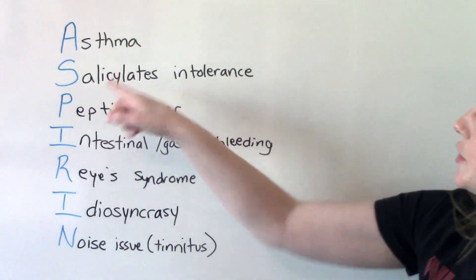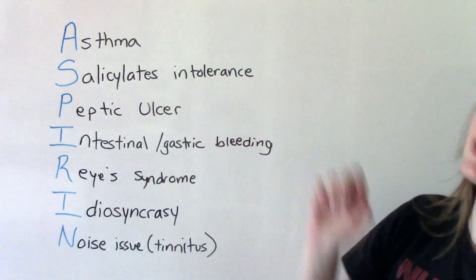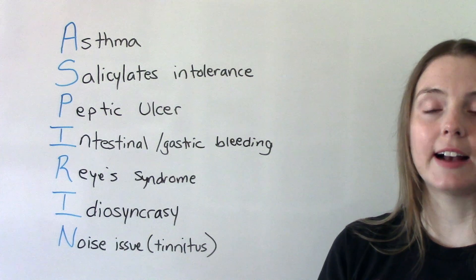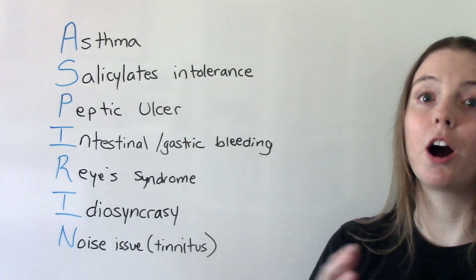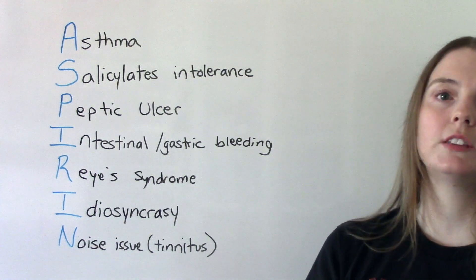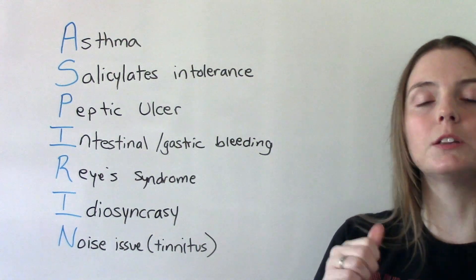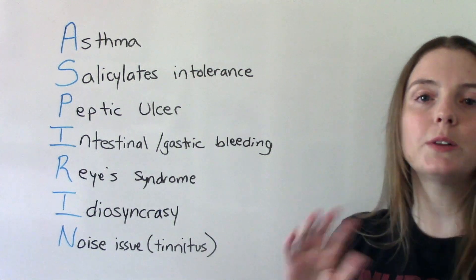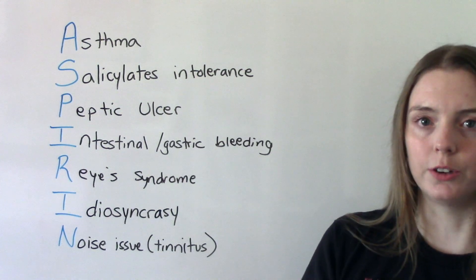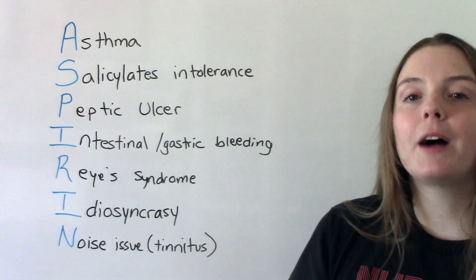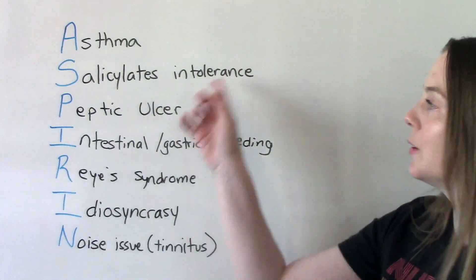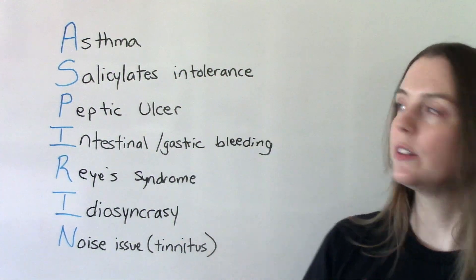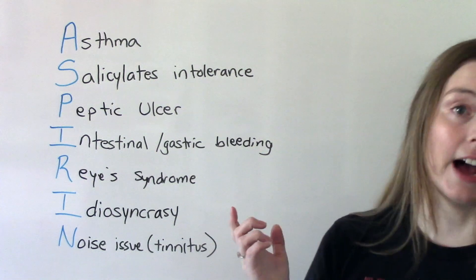S is for salicylate intolerance. This is the class of medications that aspirin is a part of, and its job is to do things like help with pain, reduce fever, and reduce inflammation. That's what it's supposed to do. Not everybody tolerates this type of medication well, so they might have an intolerance.